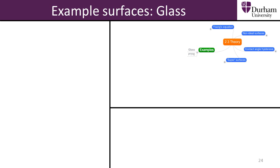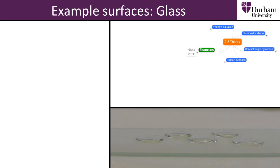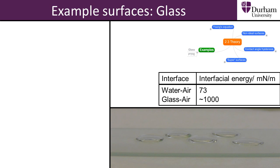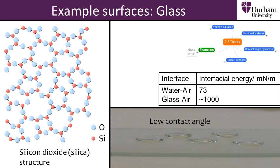An example of a surface which is naturally hydrophilic is glass. Glass has a high interfacial tension of around 1000 mN per metre. The interfacial tension of the water-air interface is much lower, at 73 mN per metre at room temperature. As a result, the contact angle is very low for high energy surfaces such as glass. The composition of glass — which is made of polar, ionic salts such as silicon dioxide — makes interaction with water favourable, and so water spreads. At the surface, the presence of silanol groups means that glass can form hydrogen bonds with water, and as a result, water can chemisorb to the surface.